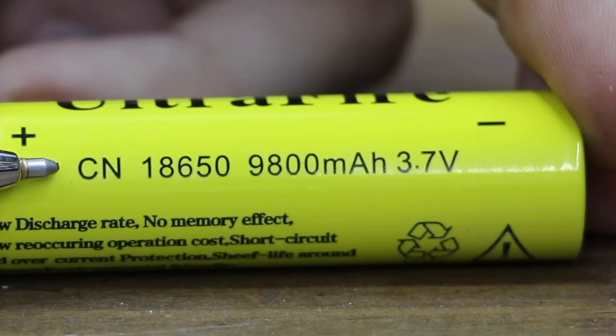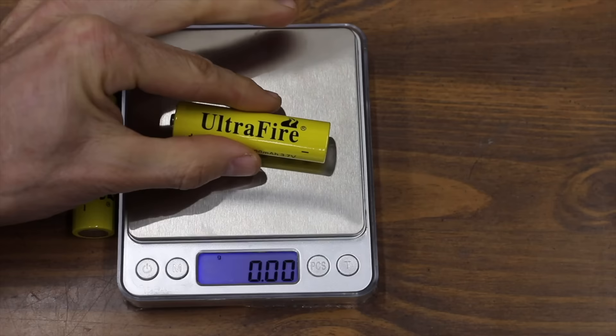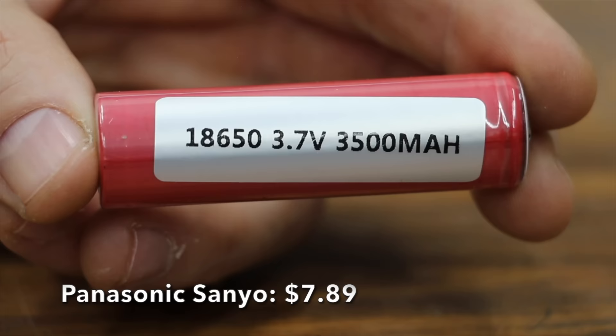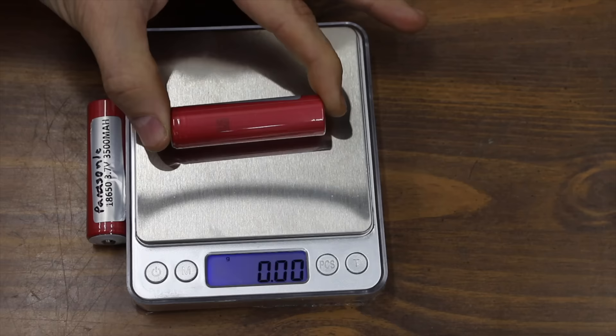The UltraFire is rated by the manufacturer at a very impressive 9,800 milliamp hours. The first sign that the UltraFire was in trouble was when it stepped onto the scale and only weighed a little over 35 grams. On the other hand, the Panasonic is only rated for 3,500 milliamp hours and it weighed 12 grams more than the UltraFire.